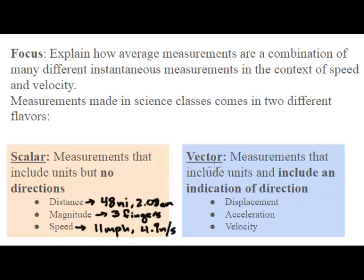But vectors are measurements that include a unit and also include an indication of direction. For example, displacement is almost exactly the same as distance except you include one thing: a direction. So for example, 2.08 centimeters, and then I include an arrow telling people what direction we're traveling in.